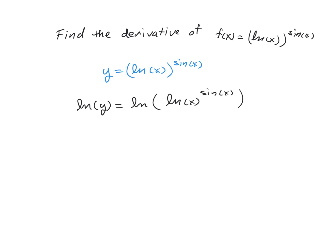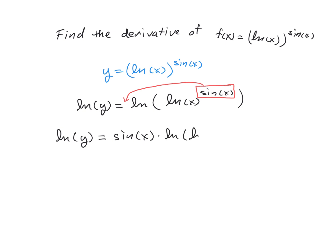And just like before, we can now use our power rule for logs and take that exponent and bring it down as a coefficient on our logarithm. So that's going to give us the natural log of y is equal to the sine of x times the natural log of the natural log of x.